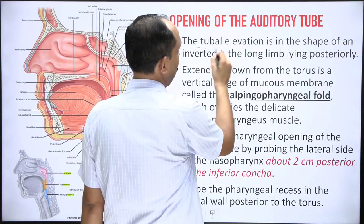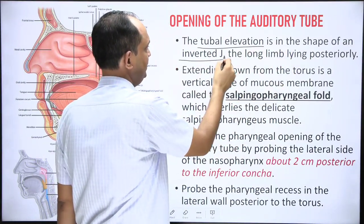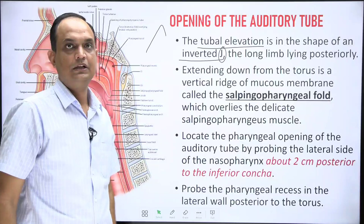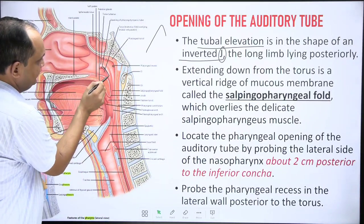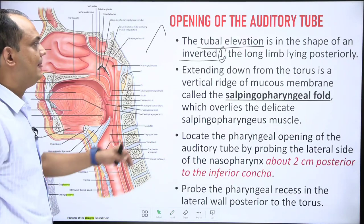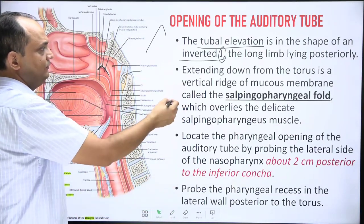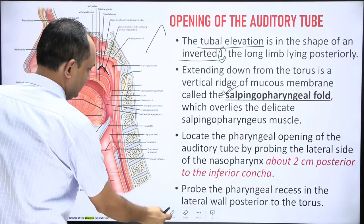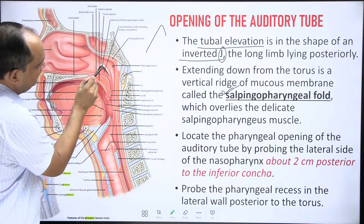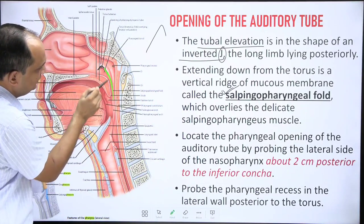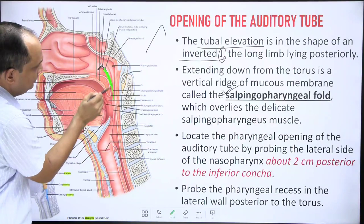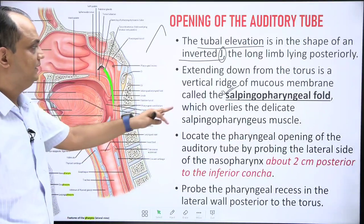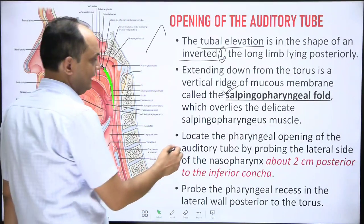The important features of the tubal elevation: it is inverted J-shaped in form, with the long limb on the posterior aspect and the short limb on the anterior side. Extending downward from the torus is a vertical ridge of mucosa known as the salpingopharyngeal fold. This fold contains the salpingopharyngeus muscle, which arises from the lower part of the auditory tube and descends downward.